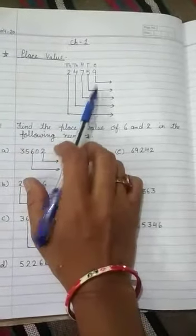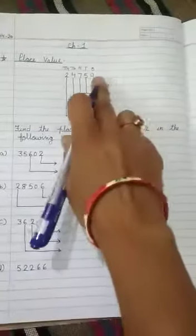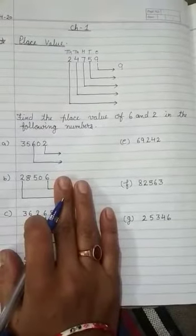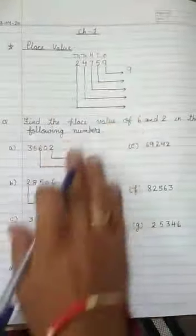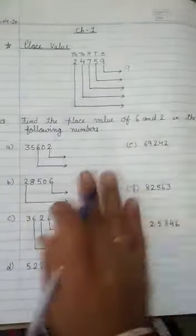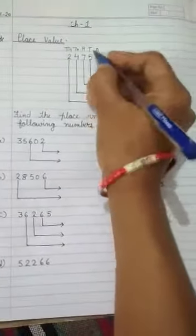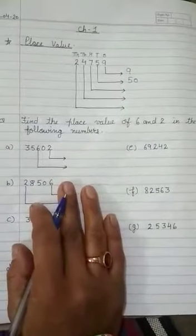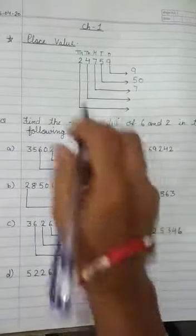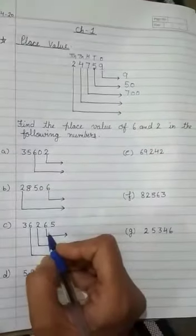Now we will find the place value of 9. We will write here 9, and after 9 there is no any digit. That's why we are not writing here any 0, or 9 is on 1's place and in 1's there is no 0. Now our next number is 5. 5 is on 10's place, and after 5 there is 1 digit. That's why we are putting here 10. Our next number is 7. We will write here 7, and after 7 there are 2 digits. That's why we are writing here 2 zeros.